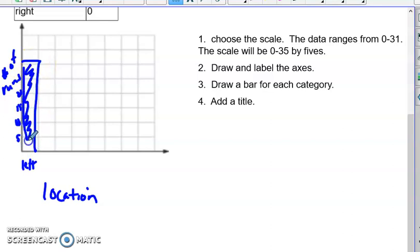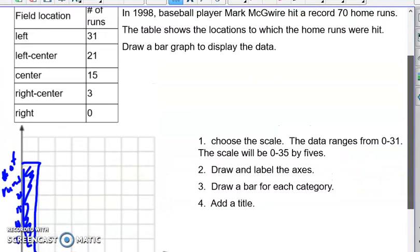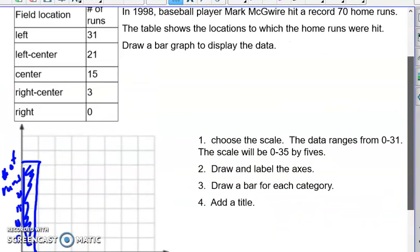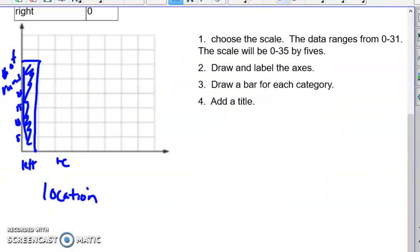And you want to allow a little bit of space between them. So the next one is our left center. I'm just going to call it LC for short. And it looks like we had 21 in that category. So we're going to go 5, 10, 15, 20, a little over 20. So we'll go about there.